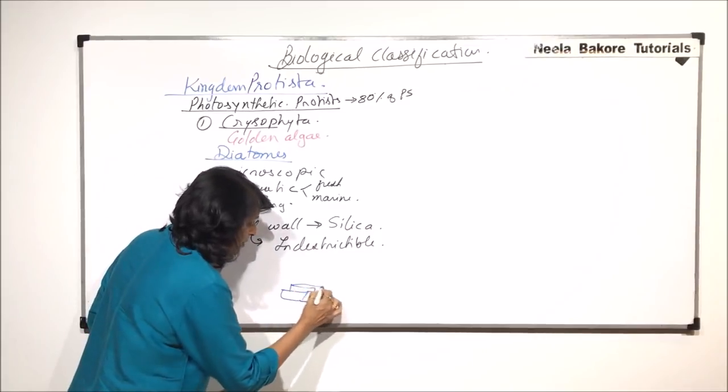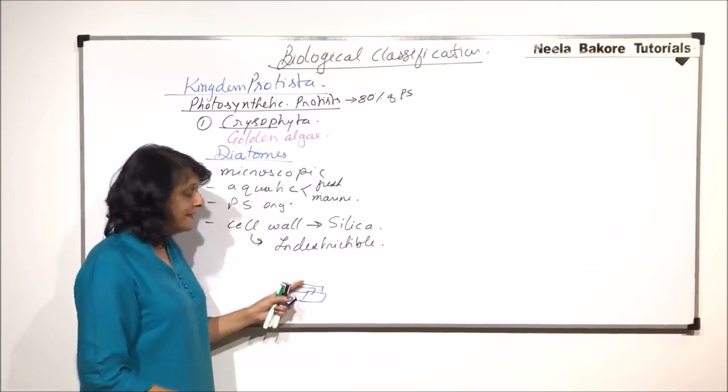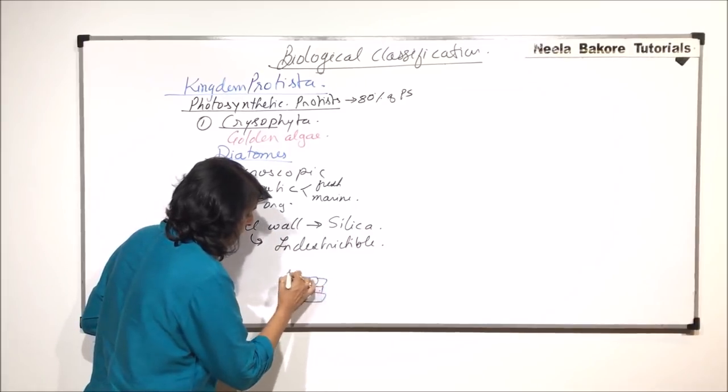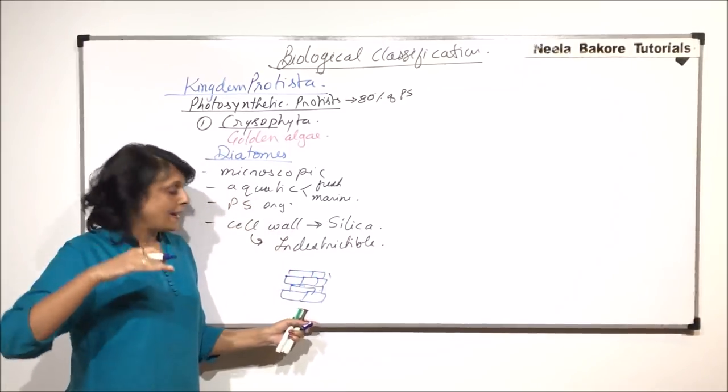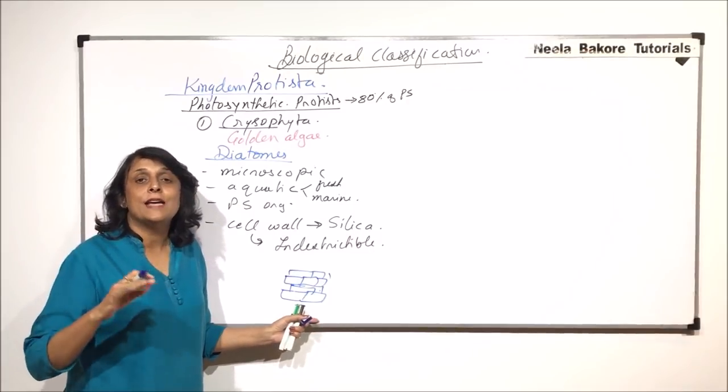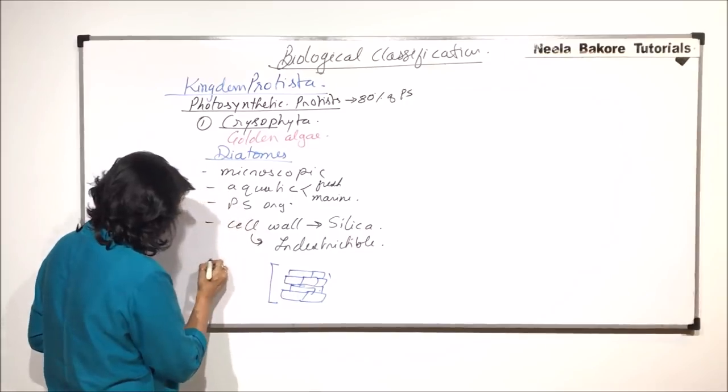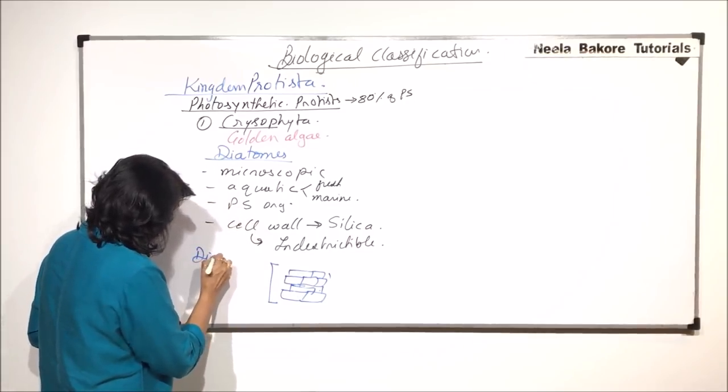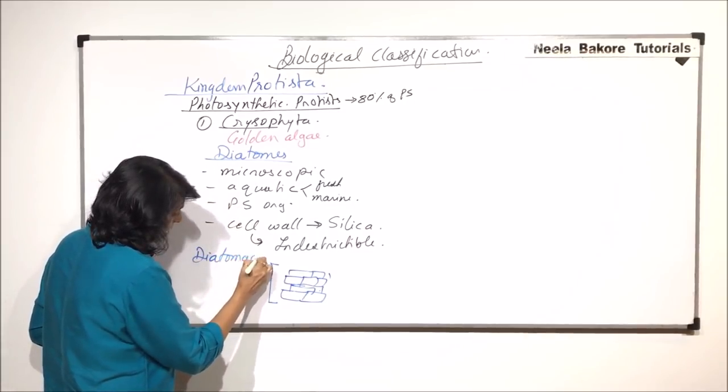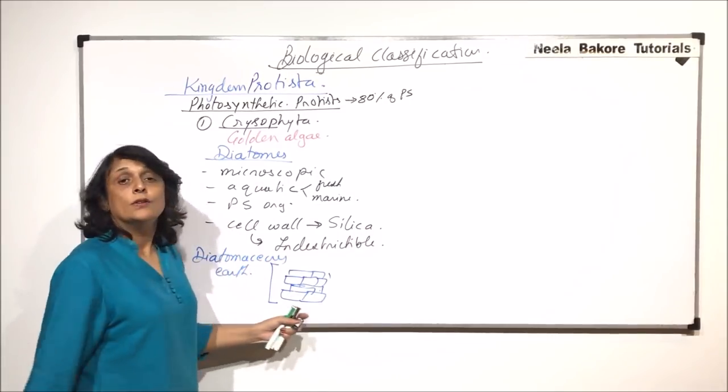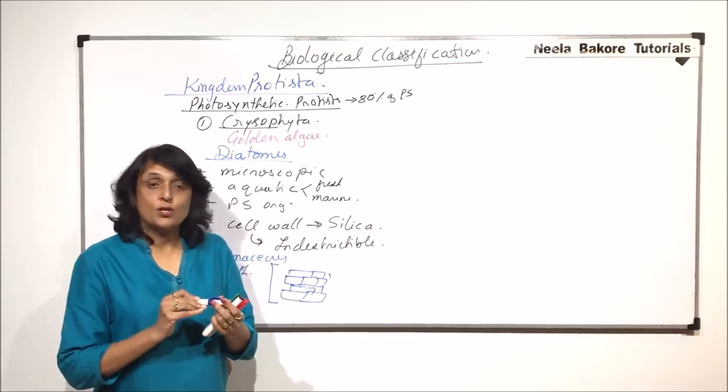The new diatoms start to grow above it. When their cytoplasmic content dies, the next one grows above it. There are layers and layers of all these diatoms which are deposited, and this is known as diatomaceous earth. We will talk about the uses of this diatomaceous earth.